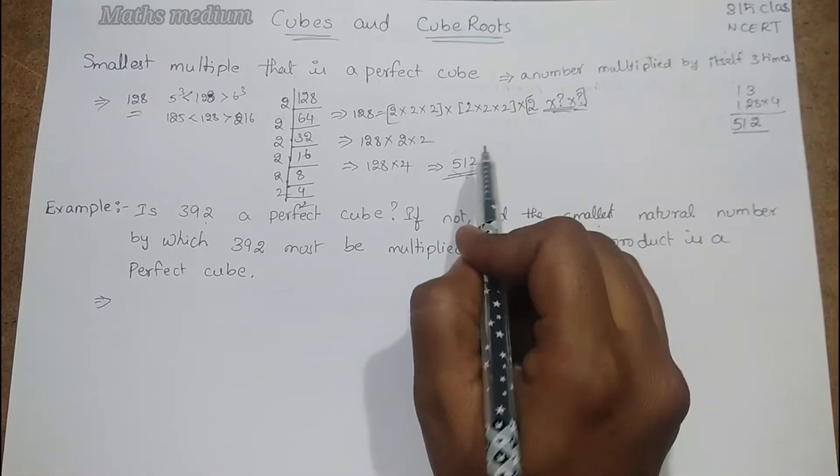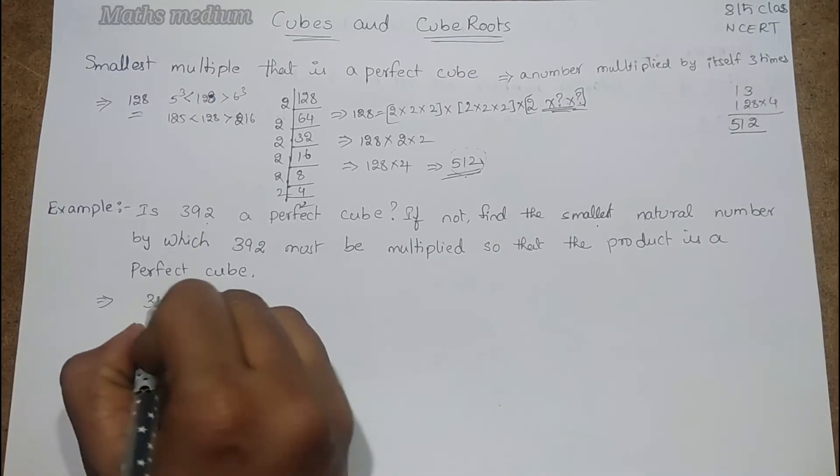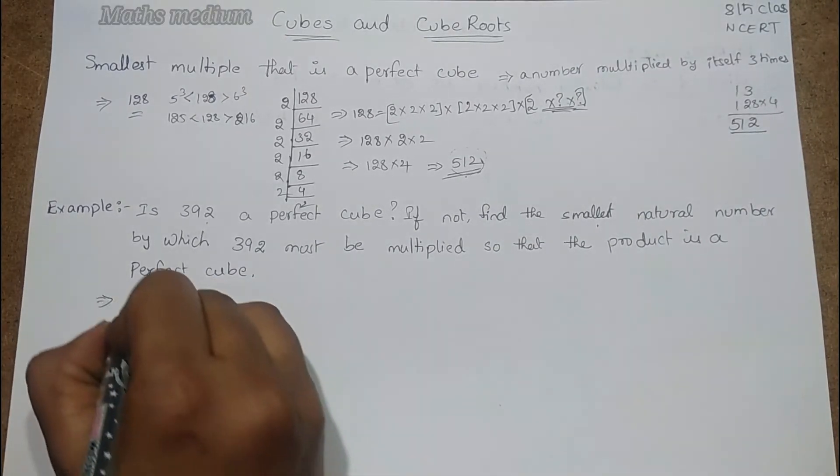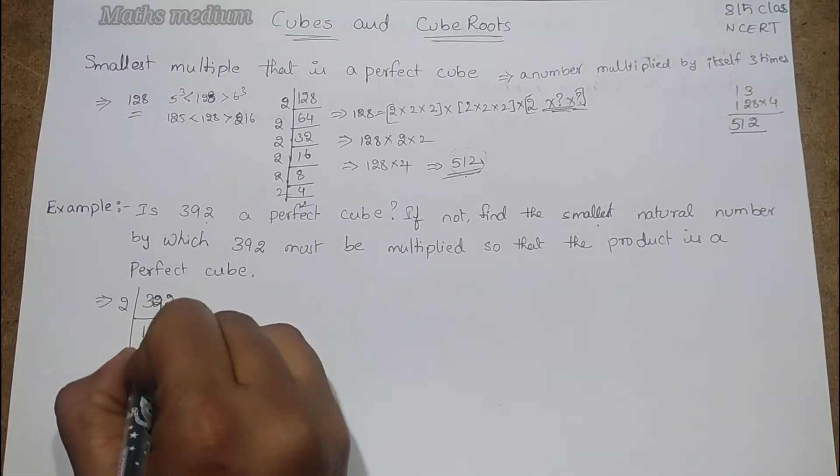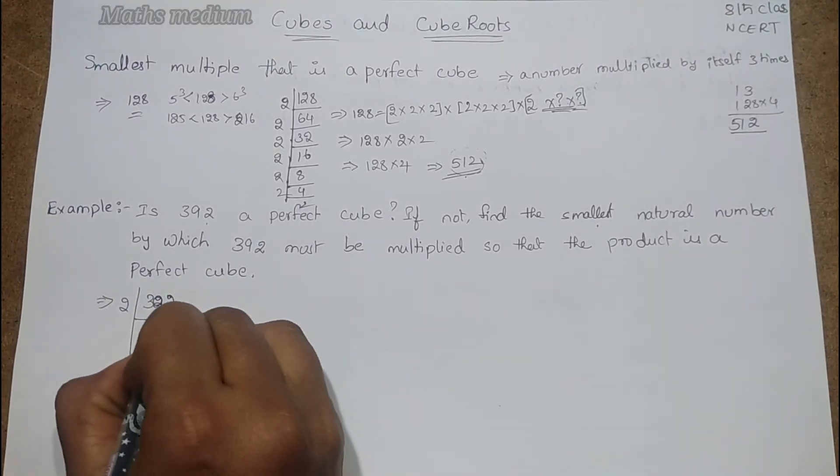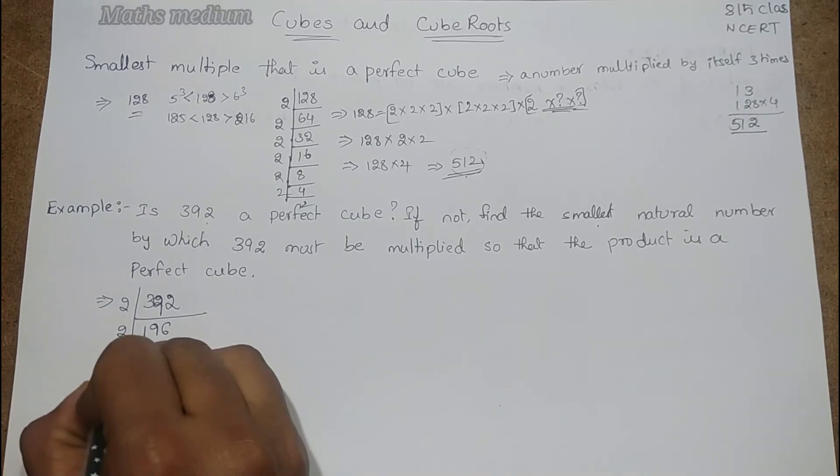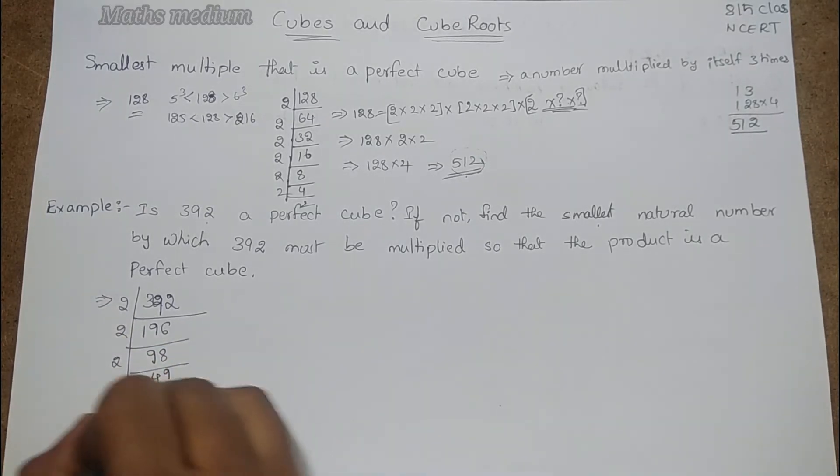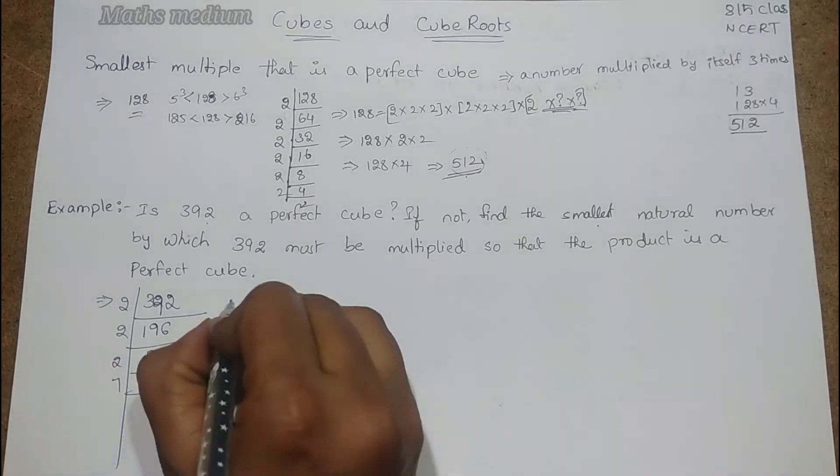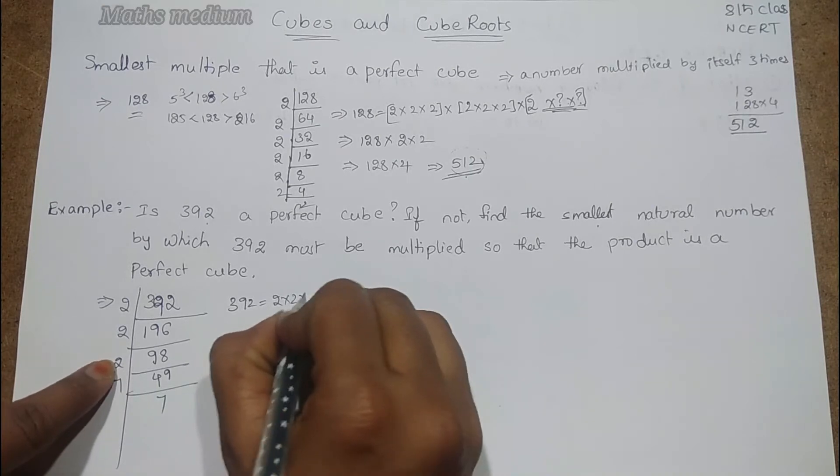Make 392 as a prime factorization: 2, 196; 2, 98; 2, 49; 7, 7; 1. Now 392 equals 2×2×2×7×7.